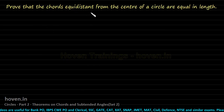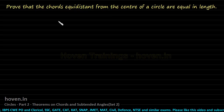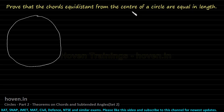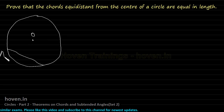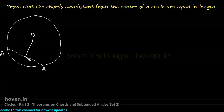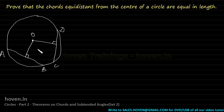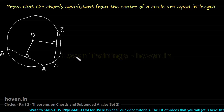Let us move to our next theorem. Prove that the chords equidistant from the center of a circle are equal in length. This is a circle given to us with chords equidistant from the center. Let O be the center, AB be a chord with perpendicular distance from O, and CD be another chord also with a perpendicular distance from O. We are given that these two perpendiculars are equal, and we have to prove that AB equals CD.